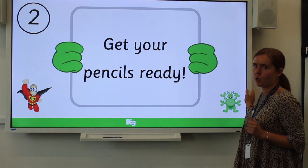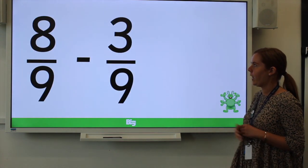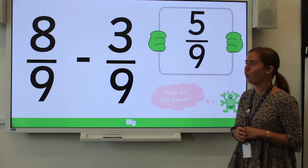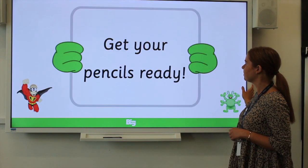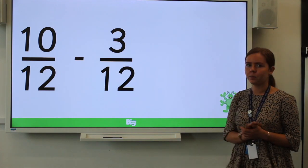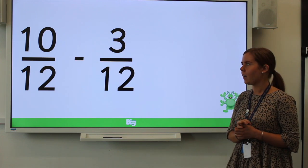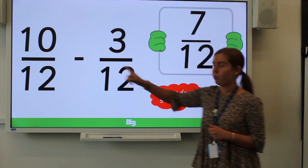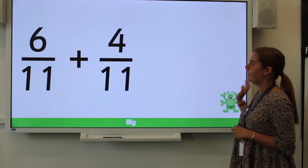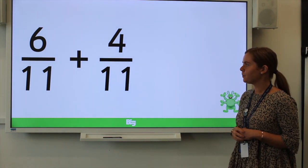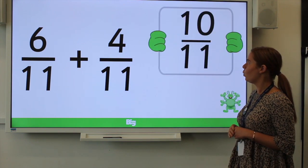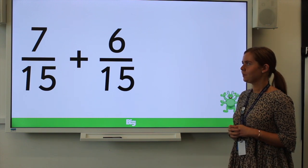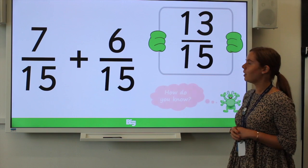Let's have a go at some on your own — a quick-fire round. You can pause if you like and work out the answer. Well done if you got five-ninths. Next one — you can pause to do your working out. Well done if you got seven-twelfths — remember this time we were subtracting. Next question, pause and have a go. Well done if you got ten-elevenths. Next one — well done if you got thirteen-fifteenths.